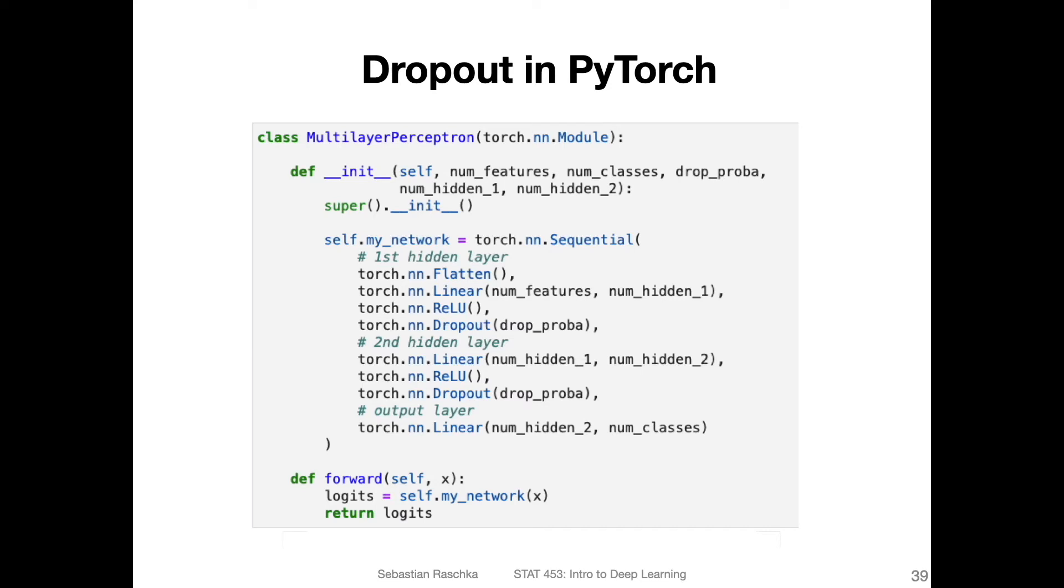And here's a code snippet illustrating how we can use dropout in PyTorch in the sequential layer. I have the full code example also in a Jupyter notebook, if you are interested to take a look at it. I have a link somewhere later in my slides, but I also will post it again on canvas. So here's the essential part for dropout. What I have is a multi-layer perceptron with two hidden layers. This is the first hidden layer, and this is the second hidden layer. And you can see, I'm just adding dropout here after the activations.